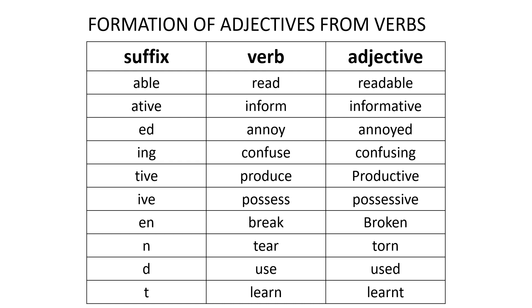Now let us check a few words where we use suffixes to change verbs to adjectives. Adding '-able': read → readable (here 'read' acts as a verb). Adding '-ative': inform → informative. Adding '-ed': annoy → annoyed. Adding '-ing': confuse → confusing. Adding '-ive': produce → productive, possess → possessive. Adding '-en': break → broken. Note that the word changes completely — this involves weak and strong verbs, which will be taught later. Also: tear → torn, use → used, learn → learnt.